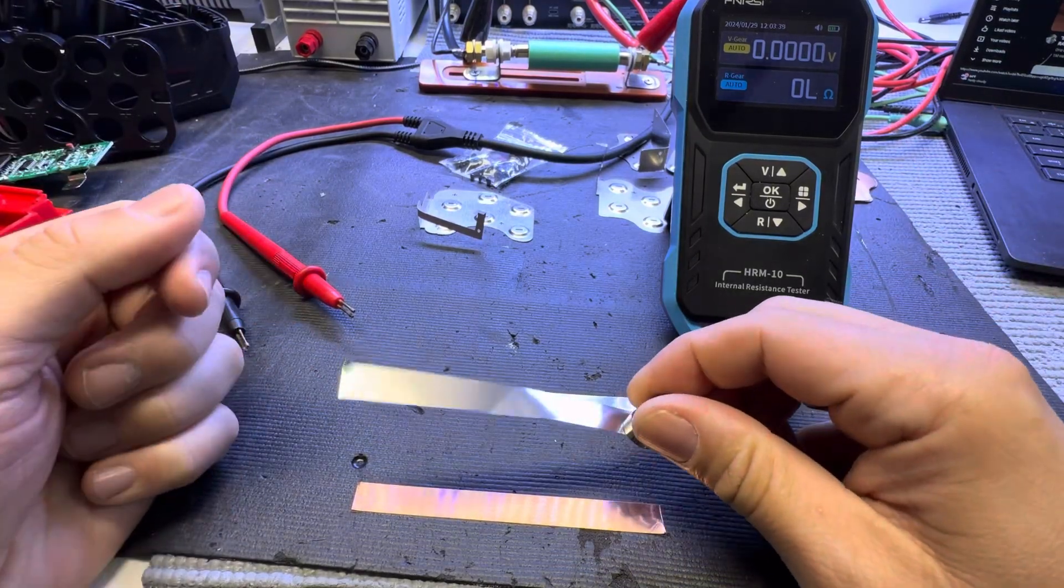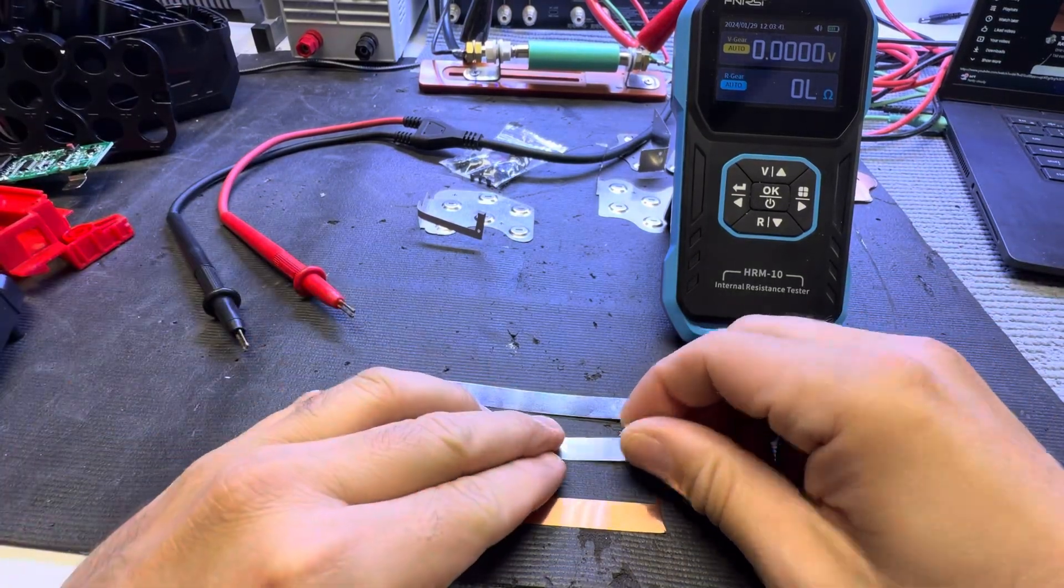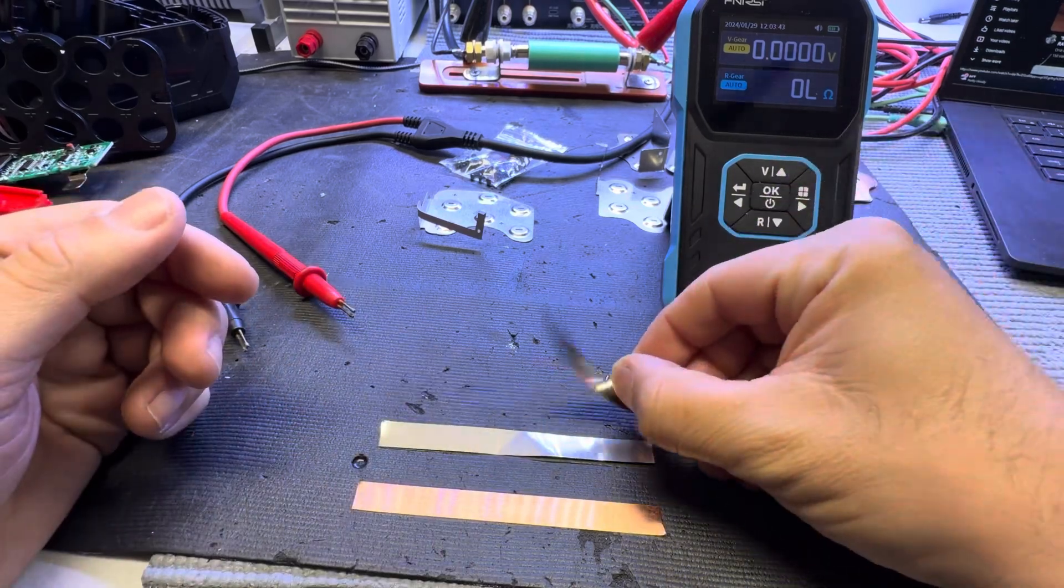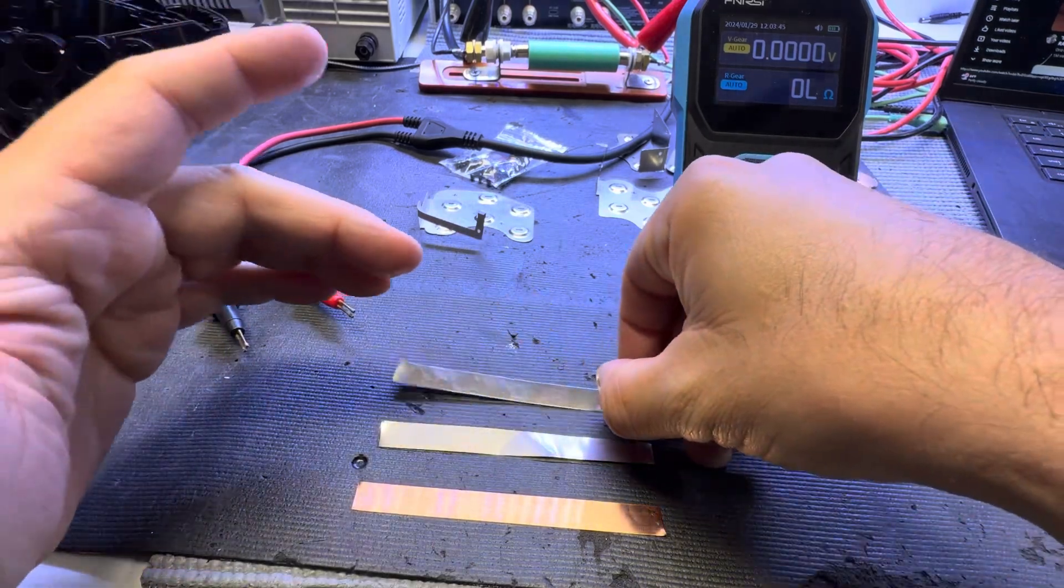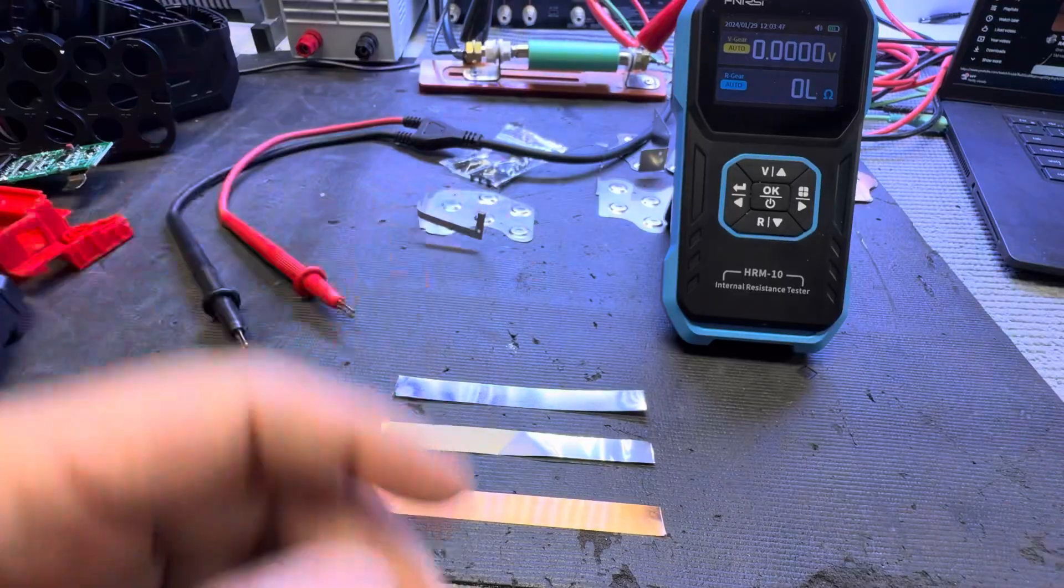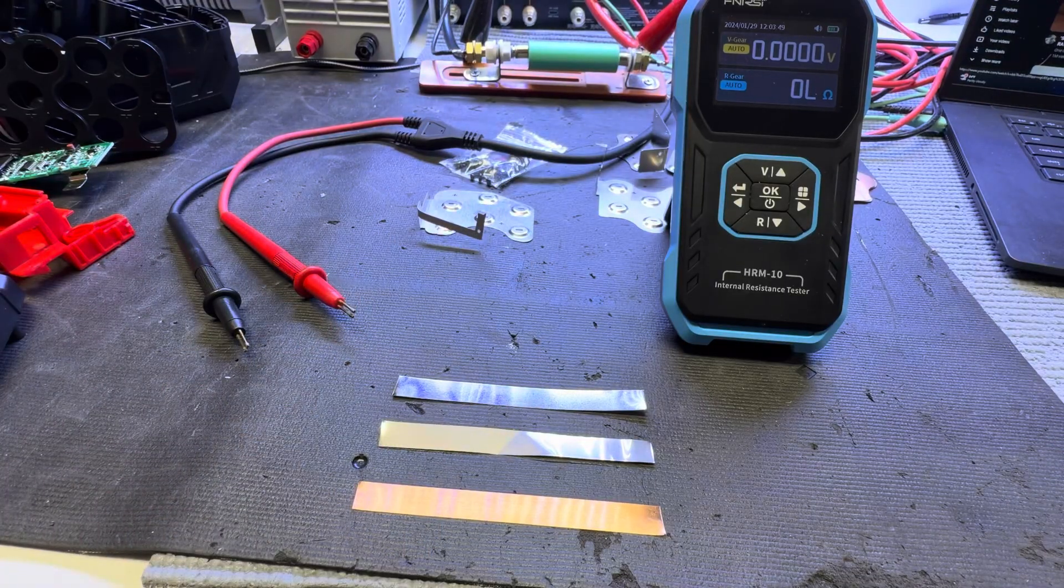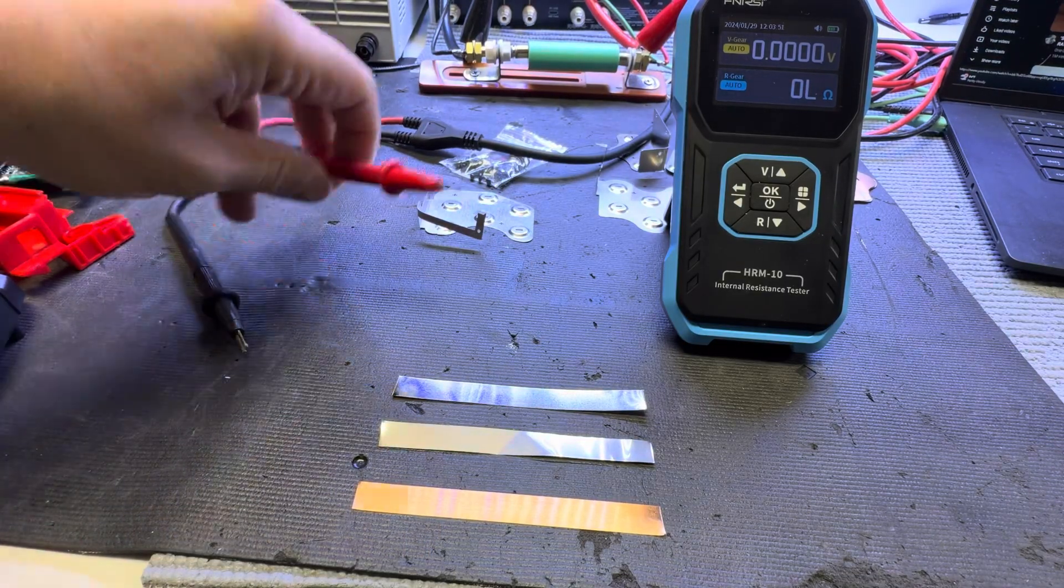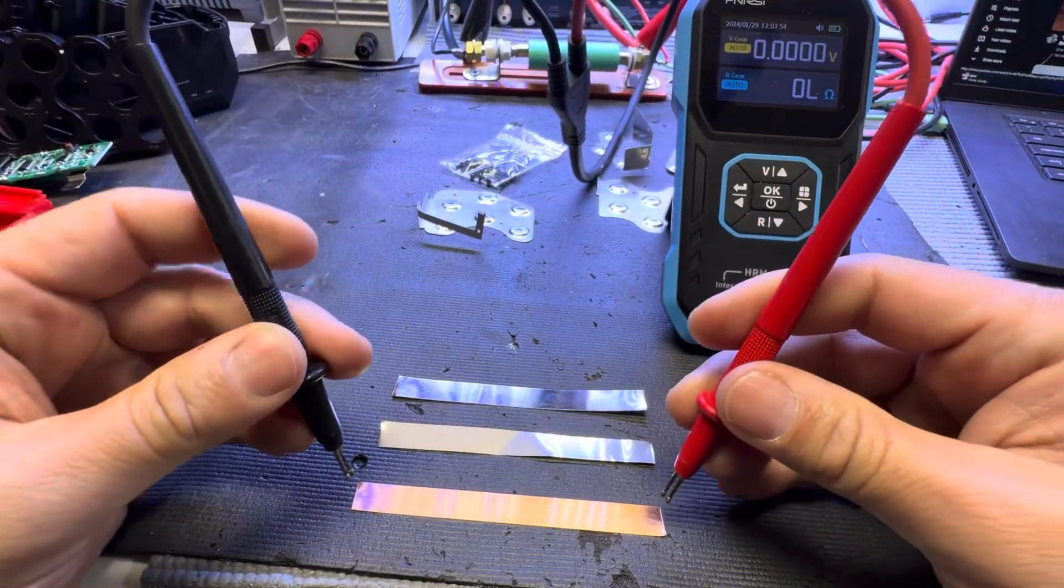Some people say pure nickel is not attracted by magnets. Guess what? Check it out - this is pure nickel and this is nickel steel. They are both magnetic, and I'm going to prove what I'm talking about.